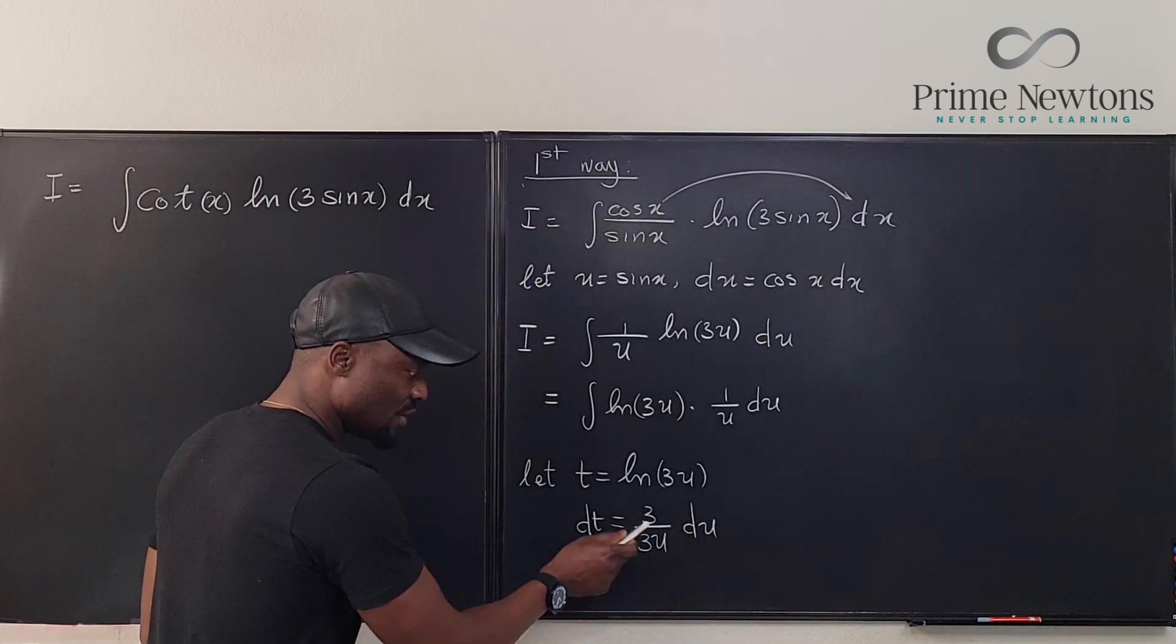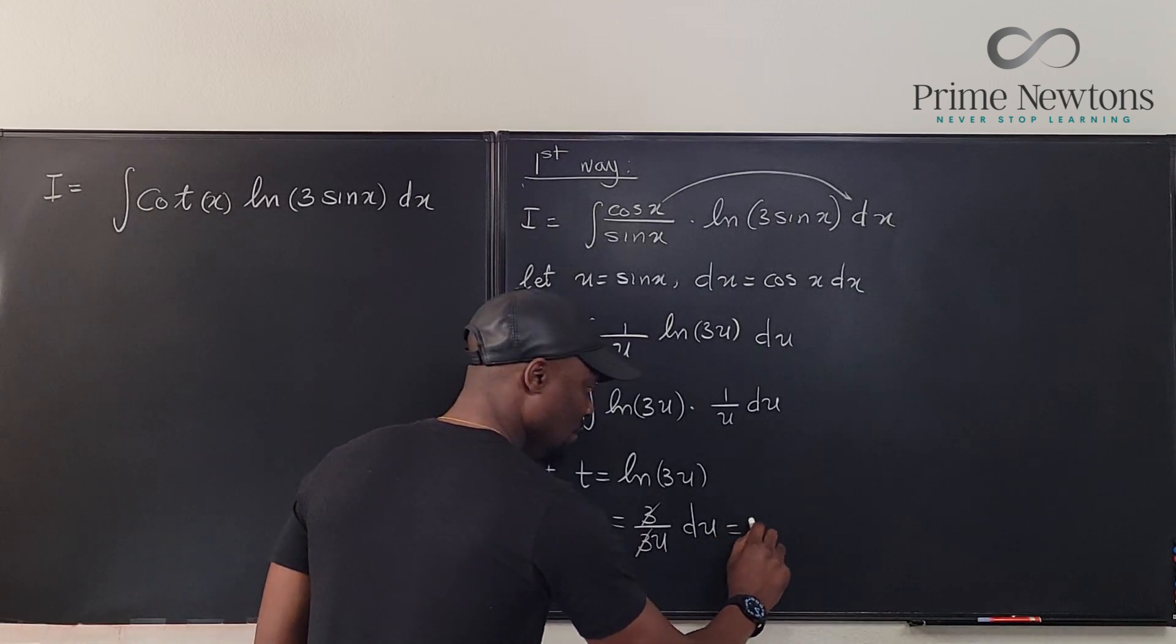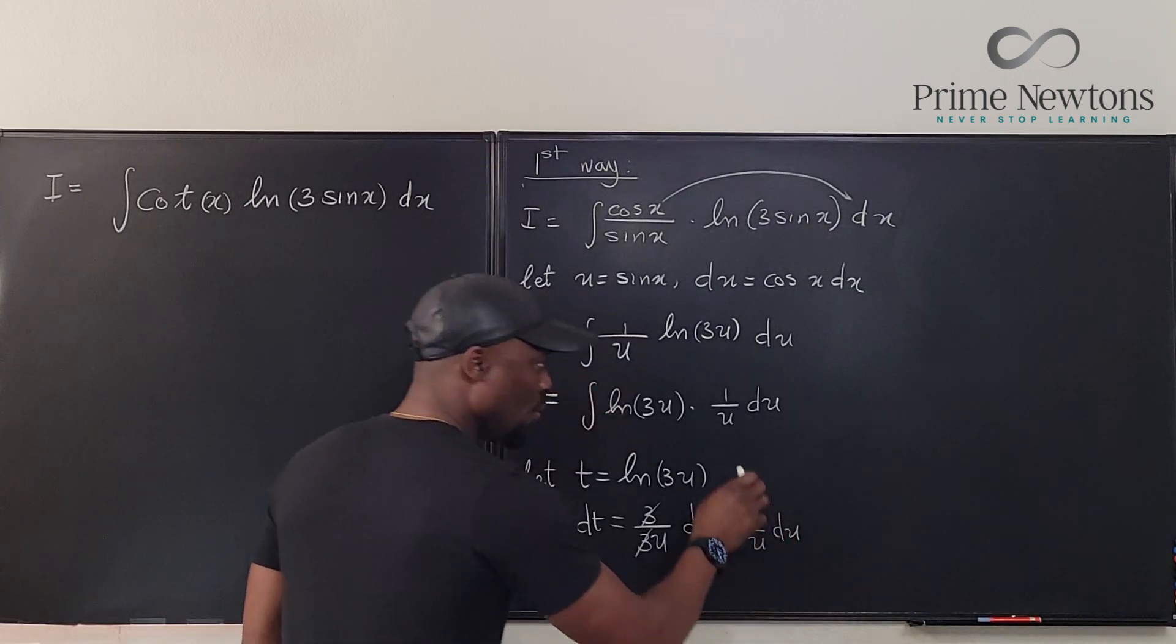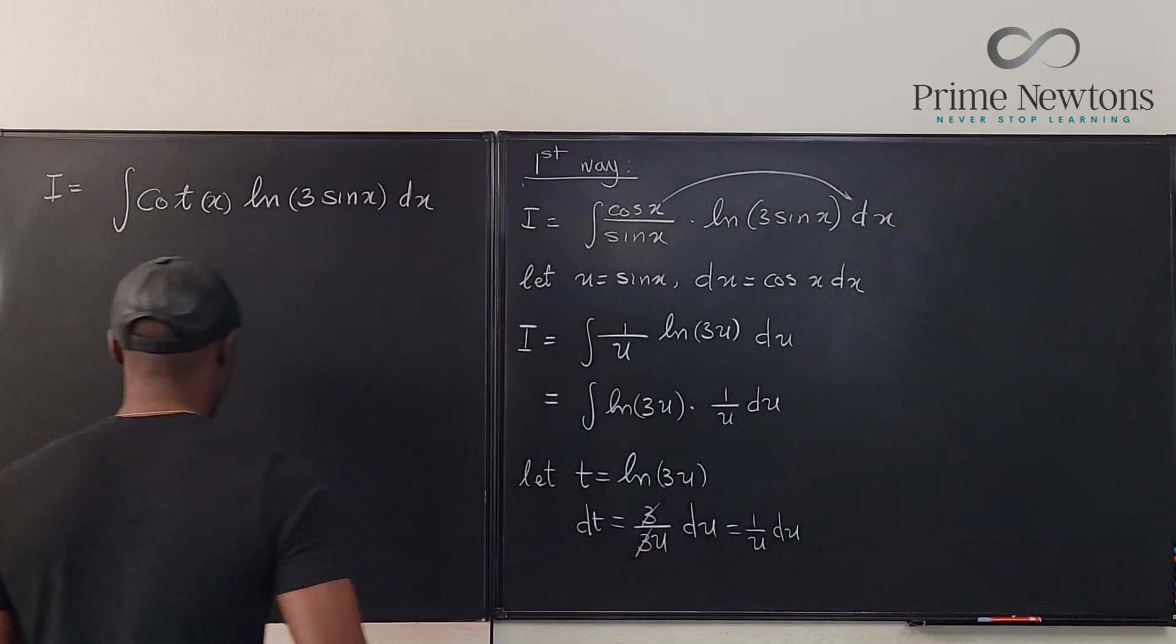This 3u is going to cancel this 3, and what you have is just 1 over u du, which is what we have here. So it means this integral will now be equal to...